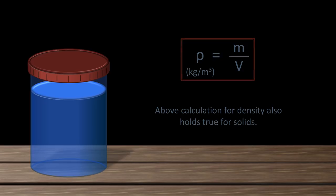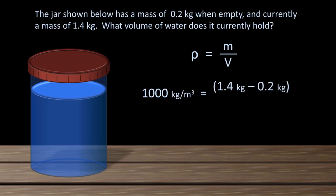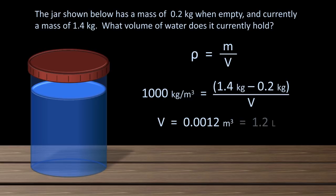Let's do a super simple example. Suppose the jar shown here weighs 0.2 kilograms when empty, and currently weighs 1.4 kilograms. What volume of water does it currently hold? Density equals mass divided by volume. Plug in the numbers: 1,000 equals 1.4 minus 0.2 divided by V for volume. Solving for V we get a volume of 0.0012 cubic meters, which is equal to 1.2 liters.